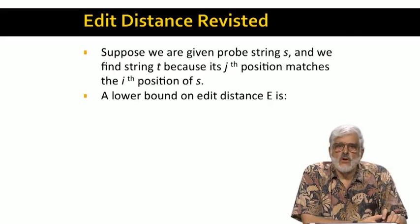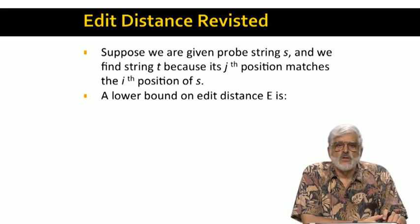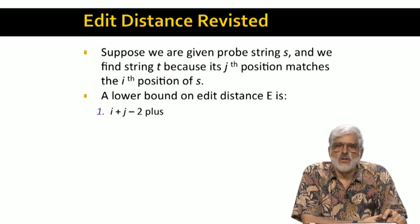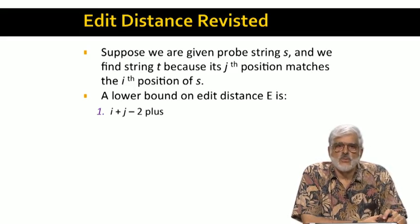Then we can derive a lower bound on the edit distance between S and T as follows. First, take i plus j minus 2. This is what we used before as a lower bound on edit distance. And its justification is that none of the first i minus 1 positions of S matches any of the first j minus 1 positions of T. So we need to do one edit on each of those positions to convert S to T or vice versa.